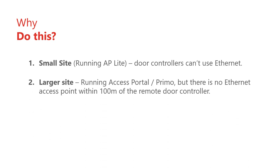The second reason is maybe this is a Primo or Access Portal site but the closest Ethernet socket is over 100 meters away. In this case you must run an RS485 cable from the remote door controller to a master controller that is plugged into Ethernet.